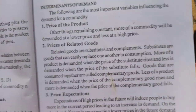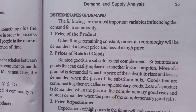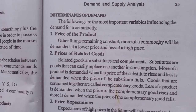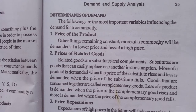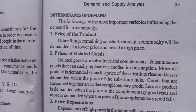The next important topic is the determinants of demand. The first determinant is the price of the product. For other things remaining constant, more of a commodity will be demanded at a lower price and less at a higher price.